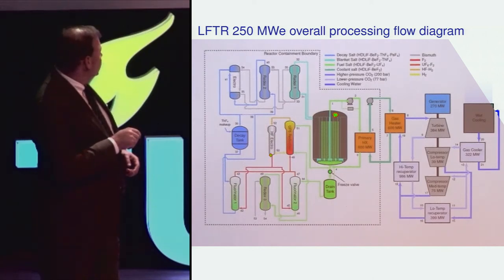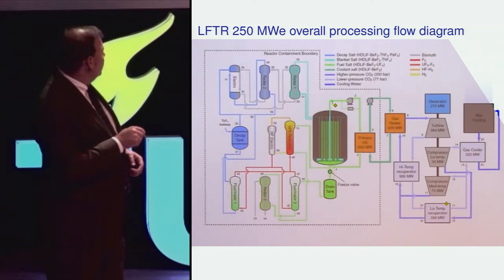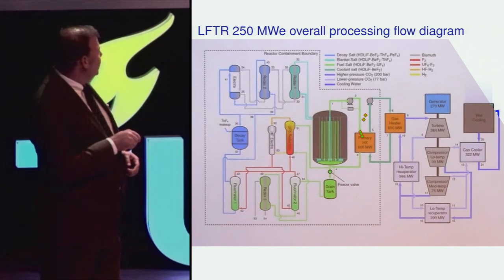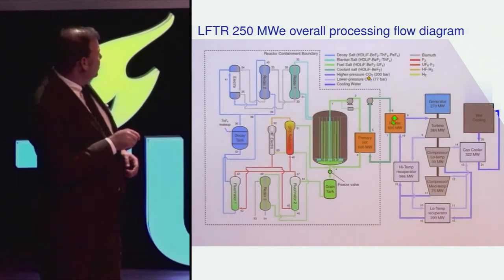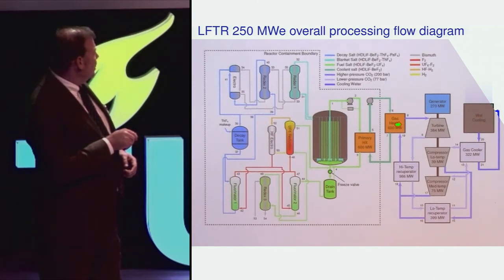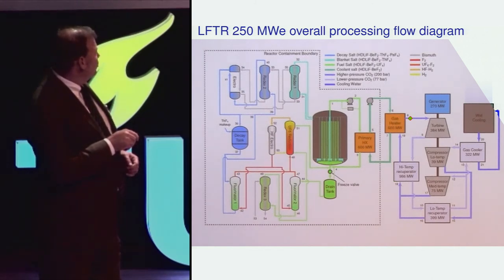The power generation takes place when fuel salt is pumped through the primary heat exchanger. It then heats the coolant salt, which then proceeds outside of the containment and heats supercritical carbon dioxide gas at about 550 degrees C turbine inlet temperature.